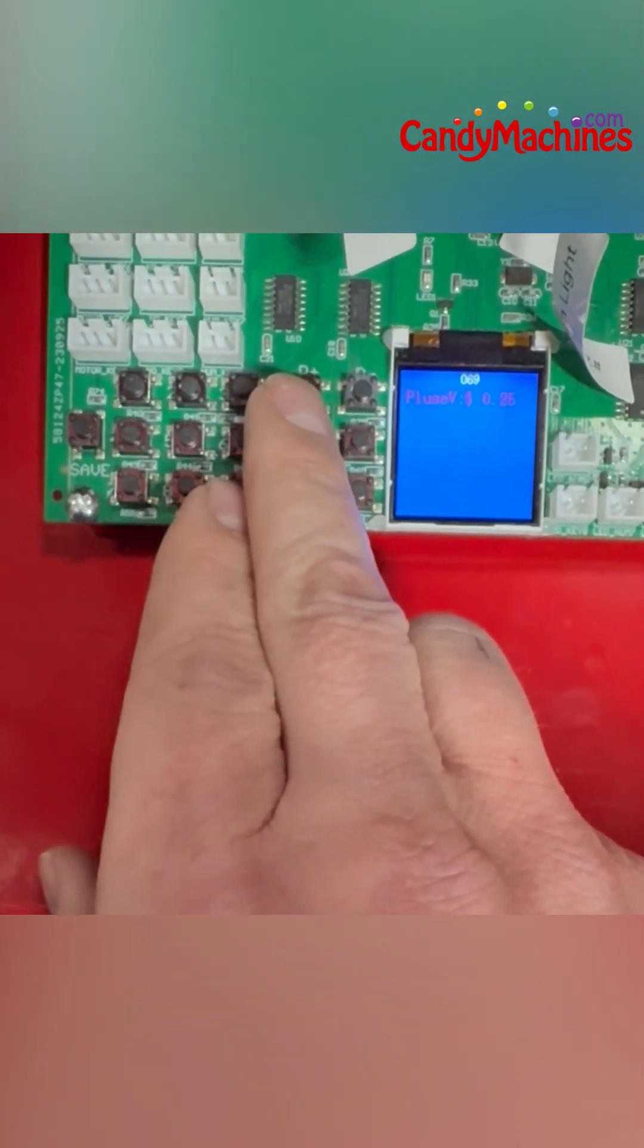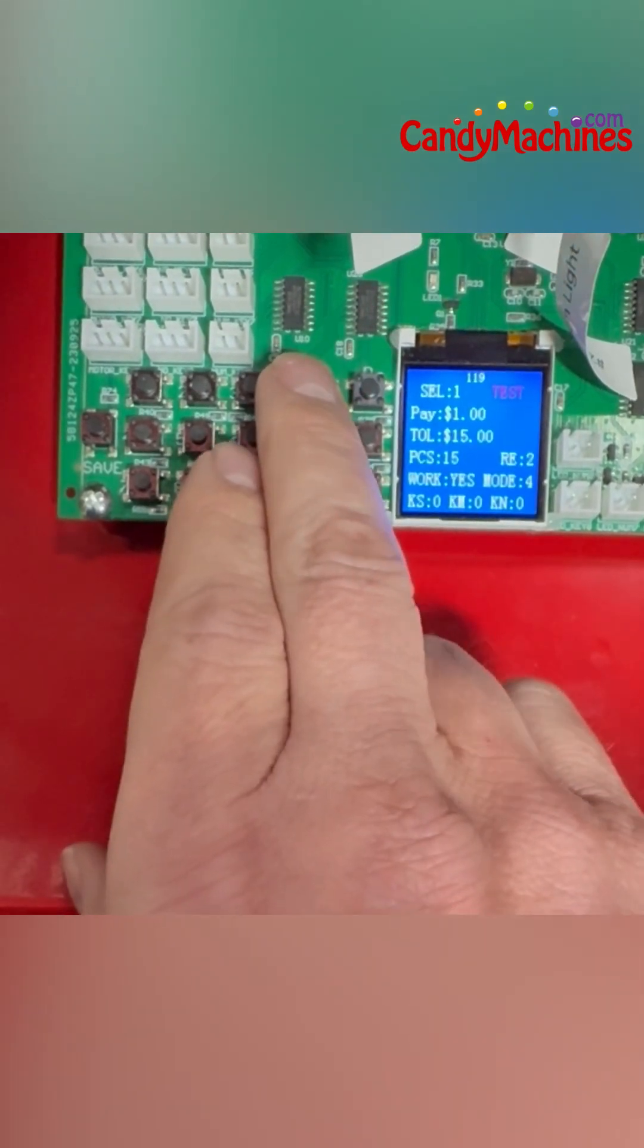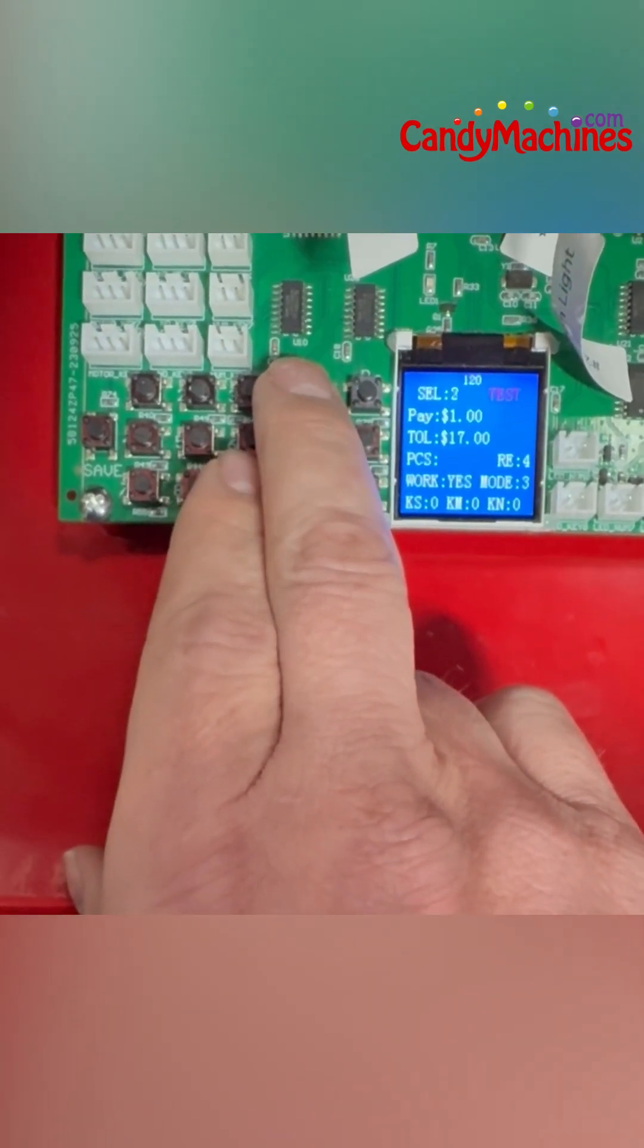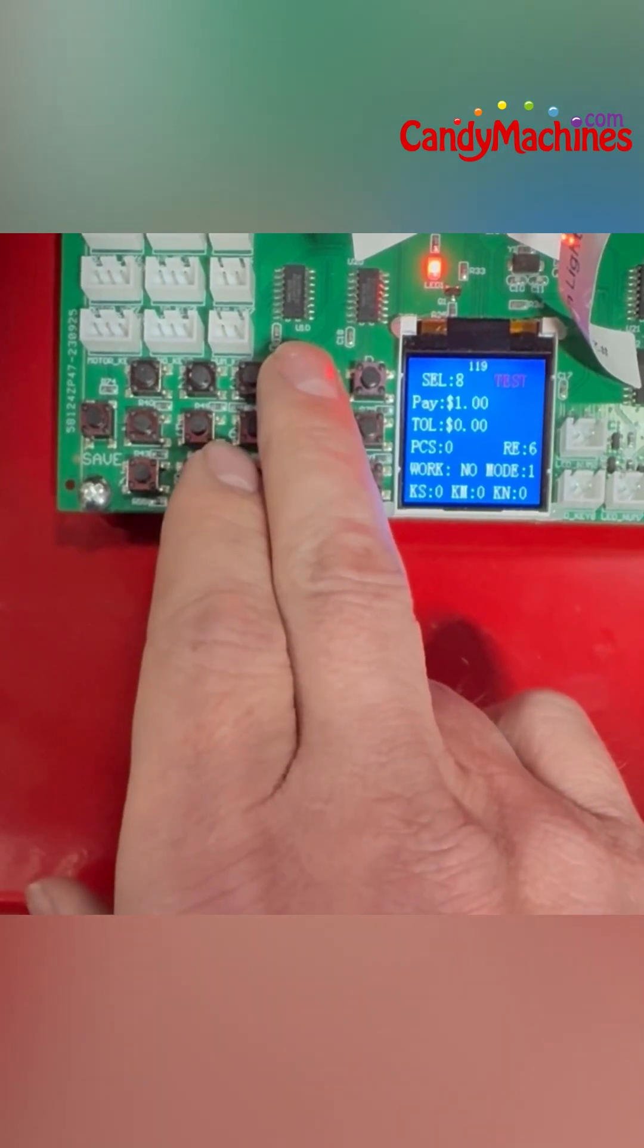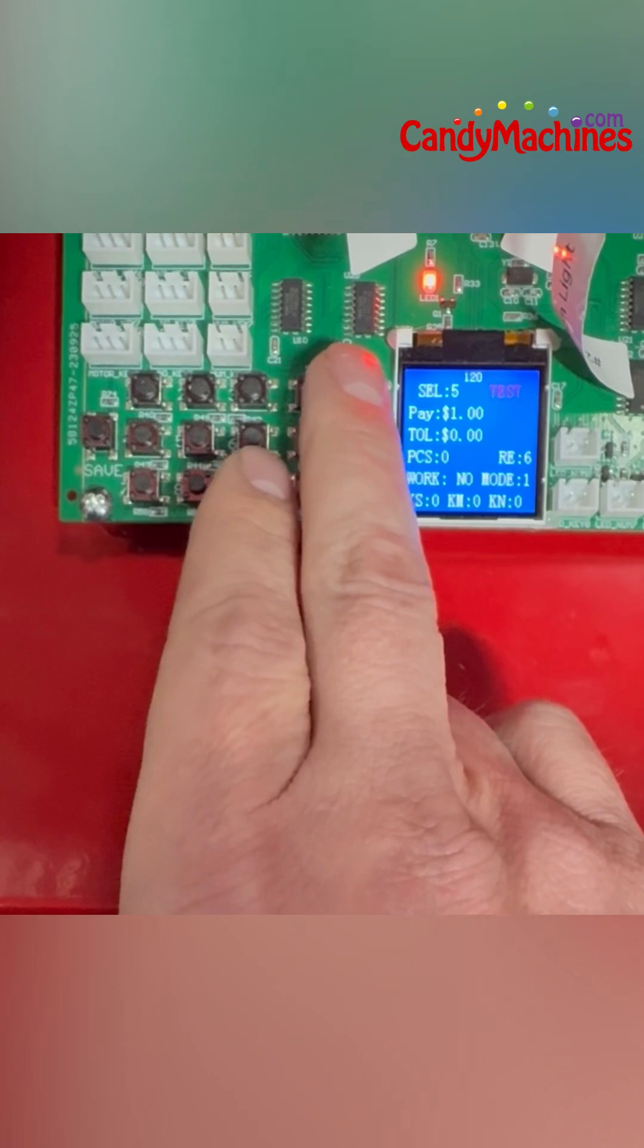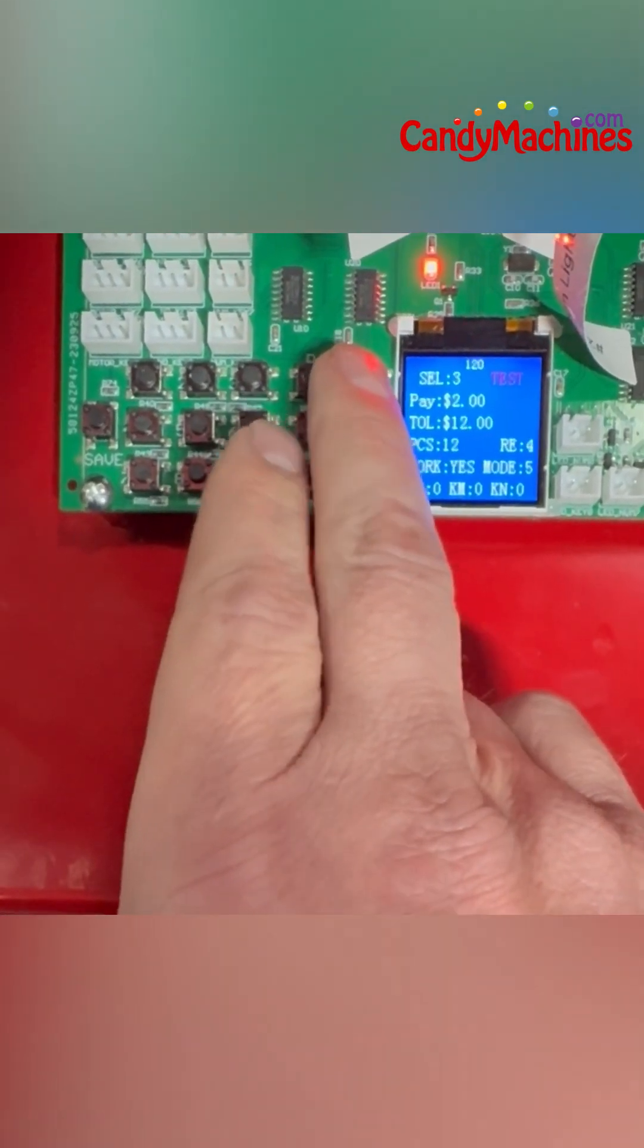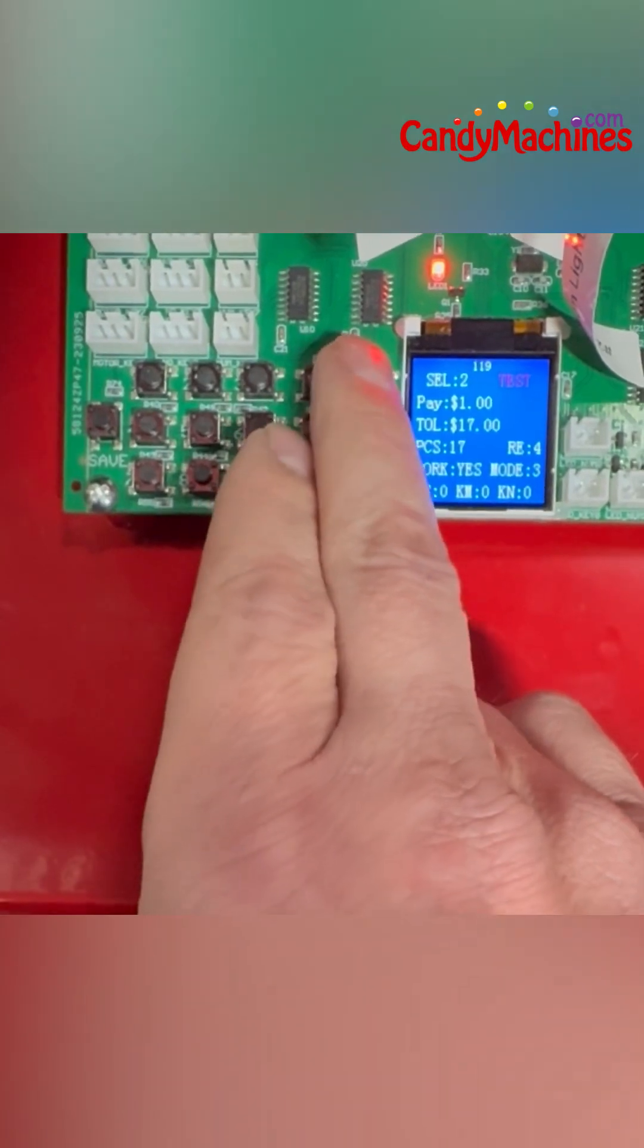And then you've got your page up, page down button, and this is how you're going to navigate to each of the selections. So this machine has three selections, but you can see that the main board here is capable of going up to eight selections. There will be expansion units available for these that allow you to go up to eight selections in the future.